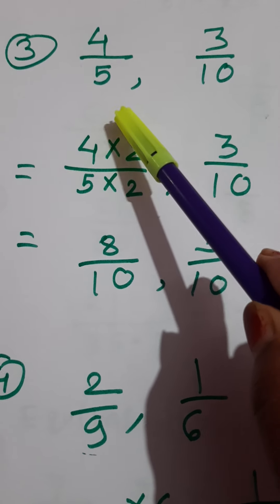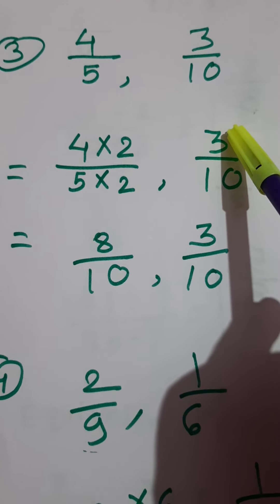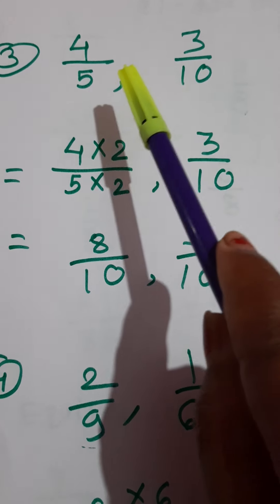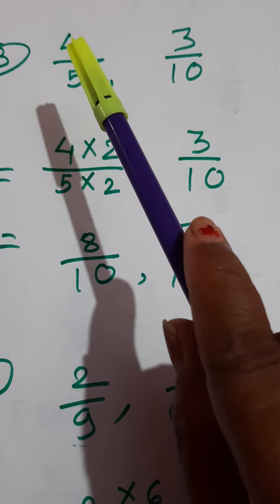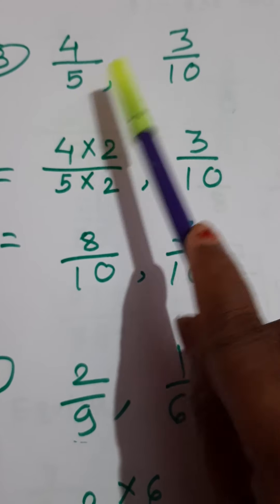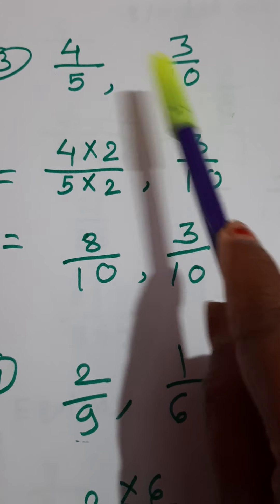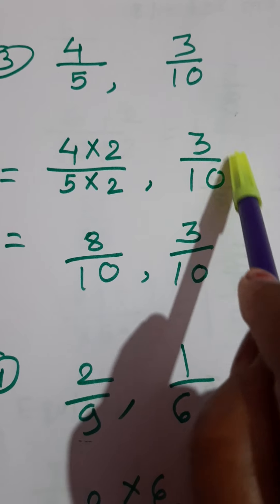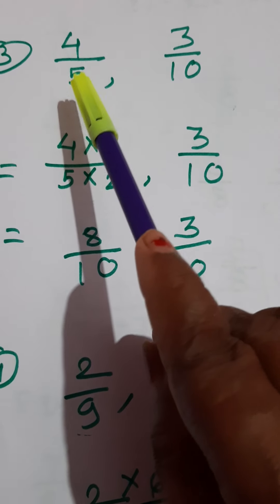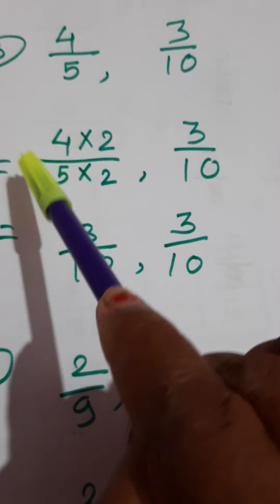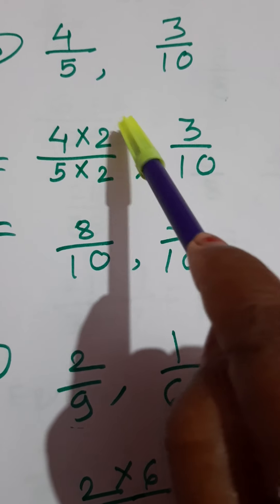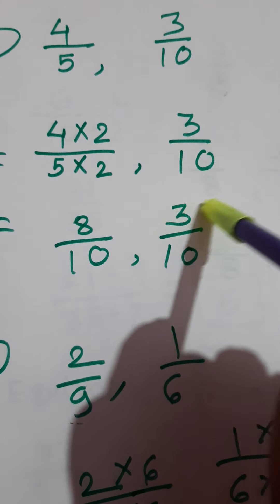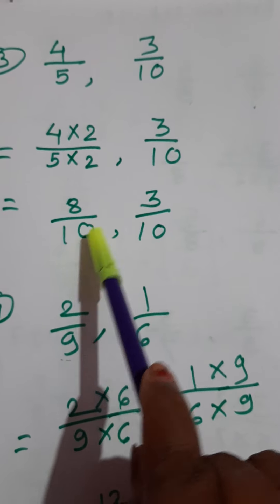Let's see the next example: 4 upon 5 and 3 upon 10. If you observe the denominators, you can immediately see that 5 and 10 are from the same table. So we can convert 5 into 10. Keep the second fraction as it is. In place of 5, how does 10 come? 5 times 2. So 4 times 2 gives 8, and 5 times 2 gives 10. Second fraction stays as it is — now they are like fractions.